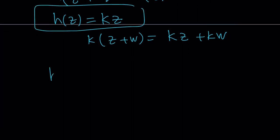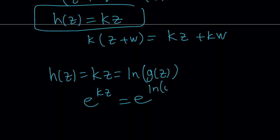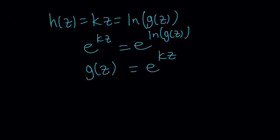h, remember, was ln g z. So from here, if you do e to the power of both sides, e to the power kz equals e to the power ln g z. But e to the power ln something is something. So g z becomes e to the power k z. k is a constant, z is the variable.